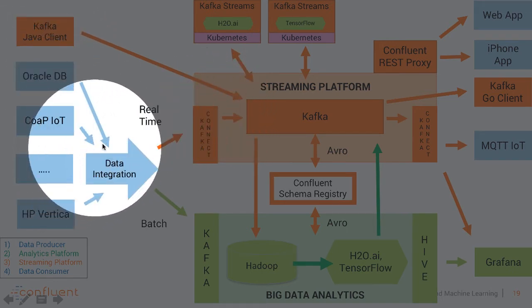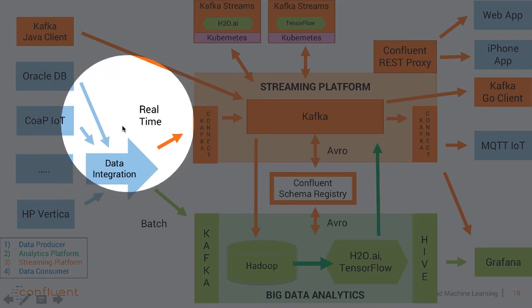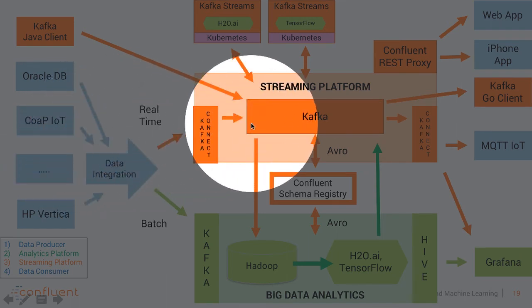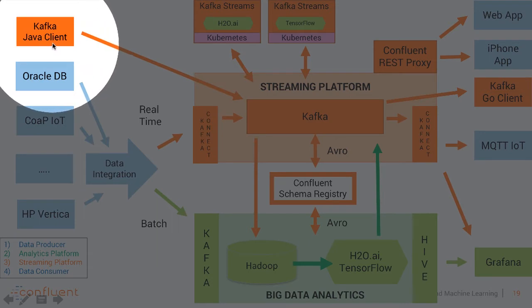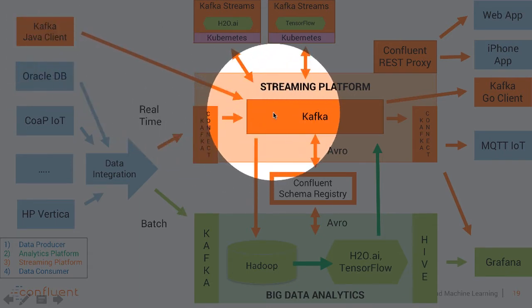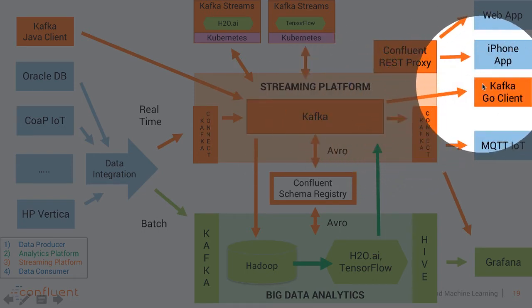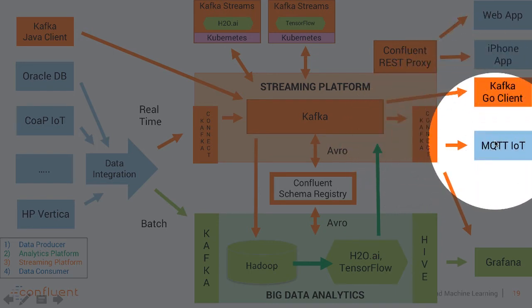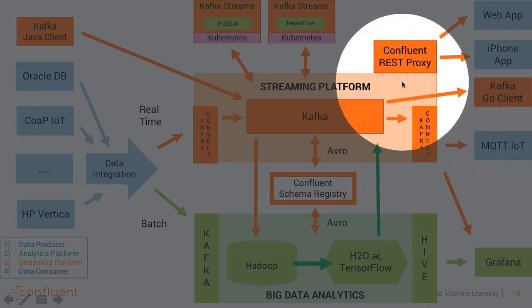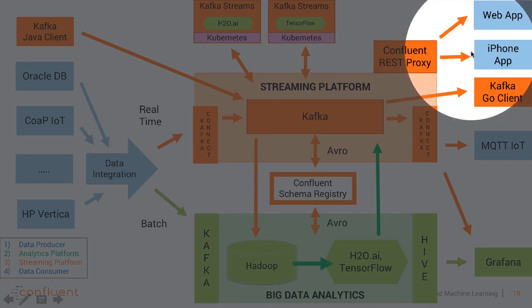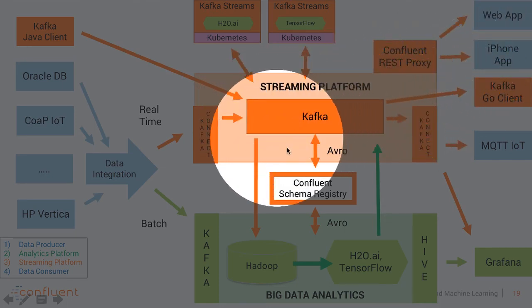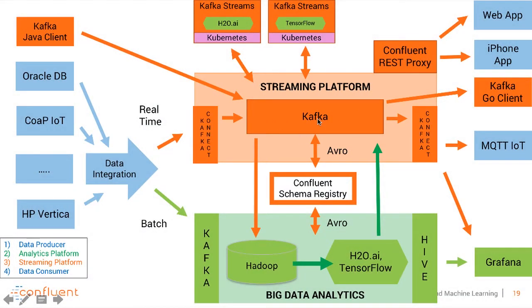We could use Kafka Connect to add new events from any database or Hadoop system to process in real-time. We can directly use Kafka clients from any language like Java, Ruby, or Python. We apply the analytic model on each incoming event and then the outcome is sent to another Kafka topic — either to a Kafka client, a consumer, via Kafka Connect to any other system, via REST proxy to a web application, or to a mobile device. The goal is to use the streaming platform in the middle to leverage machine learning for training, applying, and monitoring the model.